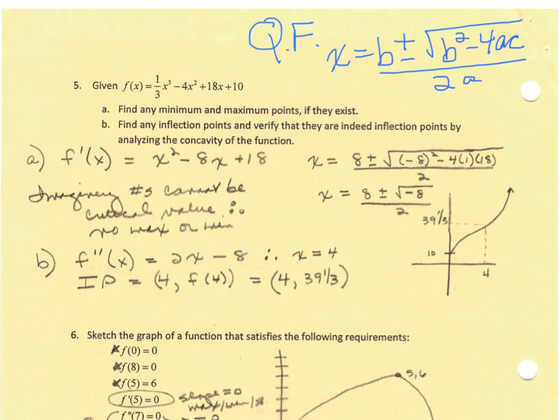And I solve for x, getting an x of 4. My inflection point, point meaning you have an x and a y value, is going to be 4, 39 and 1 third. Again, I used a calculator to get that value.